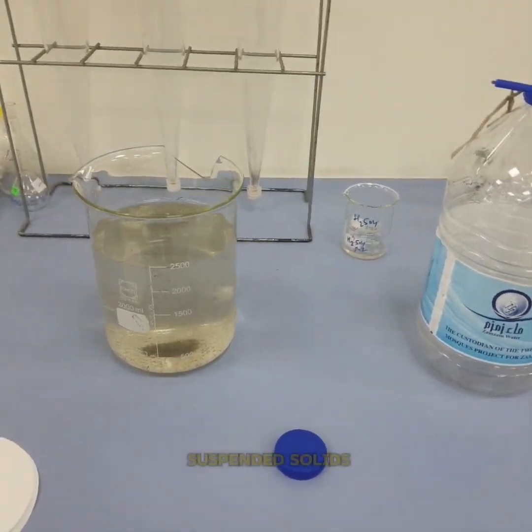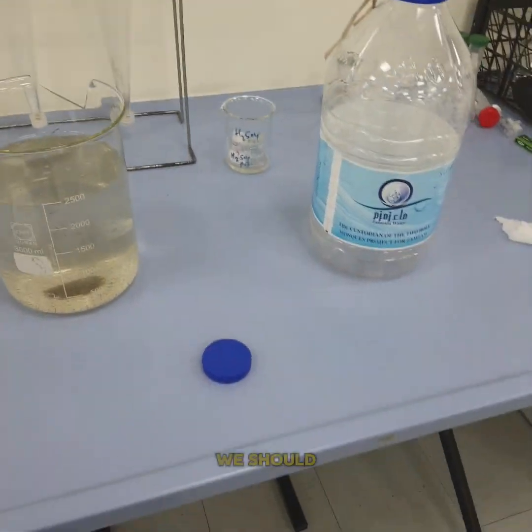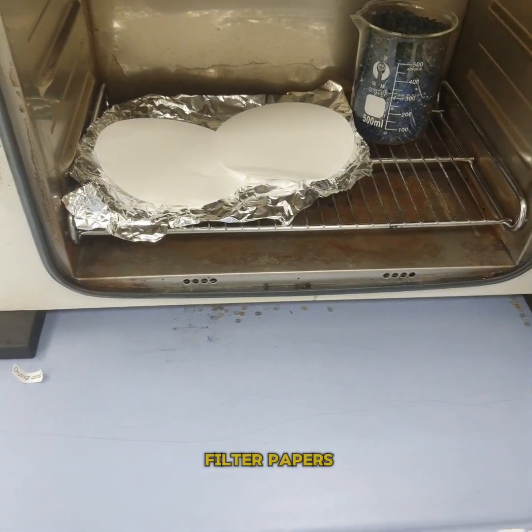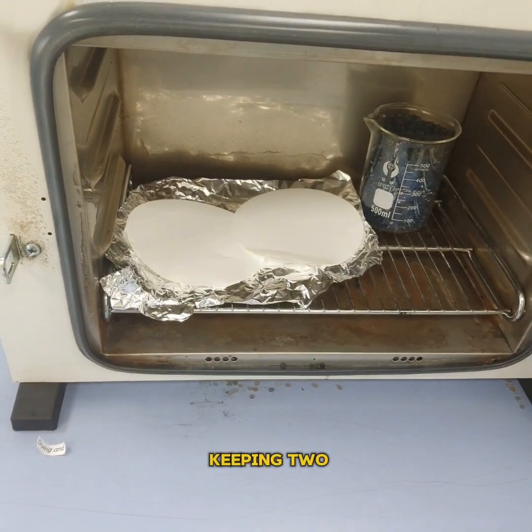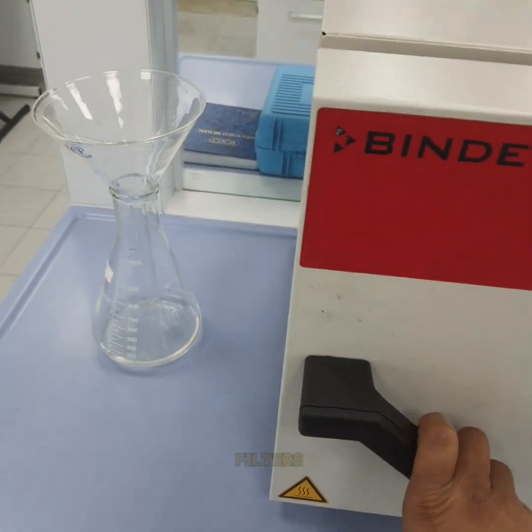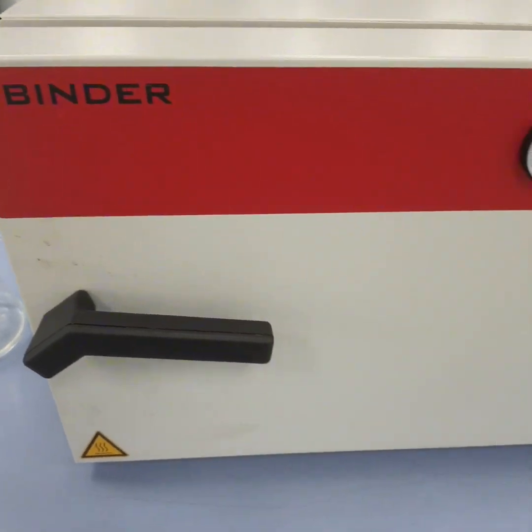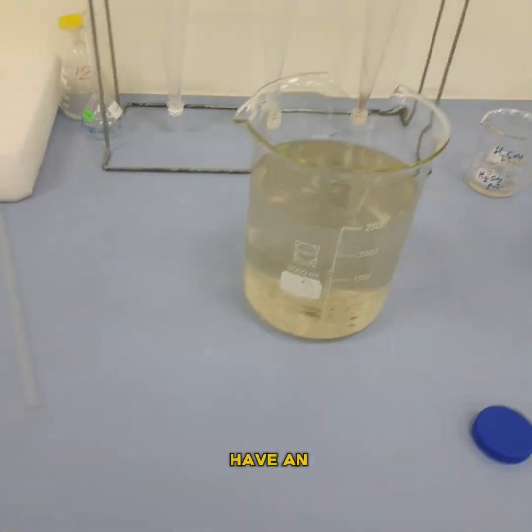Now these are our filter papers. First of all, for carrying out the mixed liquor suspended solids or total suspended solids, we should dry these filter papers. I have added two filter papers so that I'll be having two samples in order to minimize the error. Let us dry these filters at around 100 degrees Celsius for half an hour so that the moisture in the filter is removed.